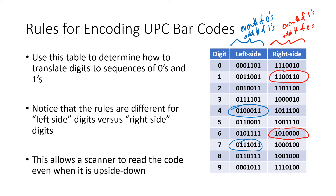This distinction is to allow the scanner to read the code upside down. If it starts reading the code thinking it's going left to right, but it gets an even number of ones and an odd number of zeros, it knows the code is actually upside down. So it'll take what it's reading and flip it internally, so that even if you're holding the object upside down, the machine can still read it and process how much whatever you're buying costs.